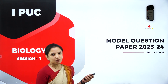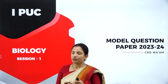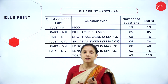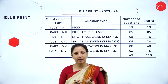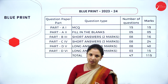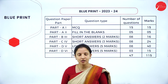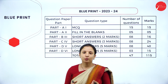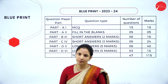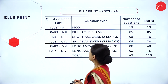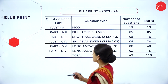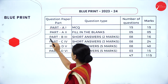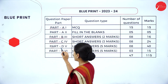In this session we will look into the blueprint and then we will look into Part A and Part B of the model question paper. In the next session — Session 2 — we will have a look at Part C and Part D. The question paper is divided into 4 parts: Part A, Part B, Part C, and Part D.